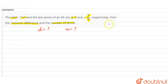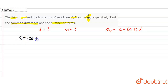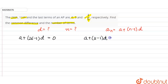The formula for calculating the nth term is: aₙ = a + (n-1)d. So the 26th term means a + (26-1)d is given as 0, and the 11th term means a + (11-1)d is given as 3.